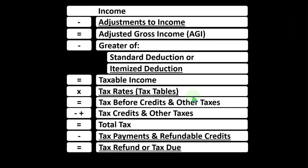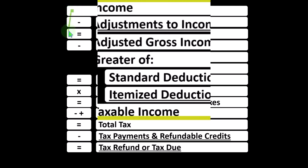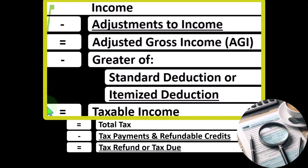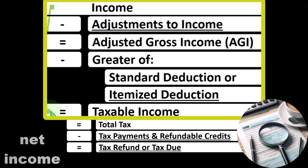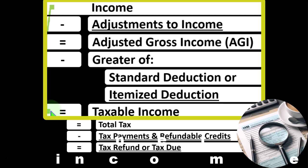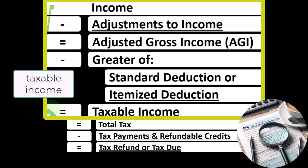Remember, in the first half of the income tax formula — basically a funny income statement — most income statements have income minus expenses resulting in net income. Here, we have income minus various deductions resulting in taxable income.